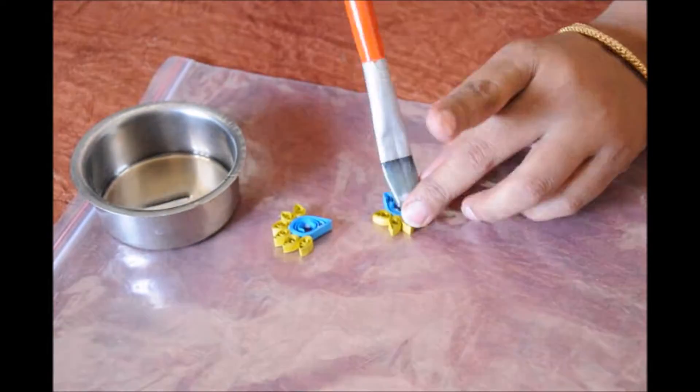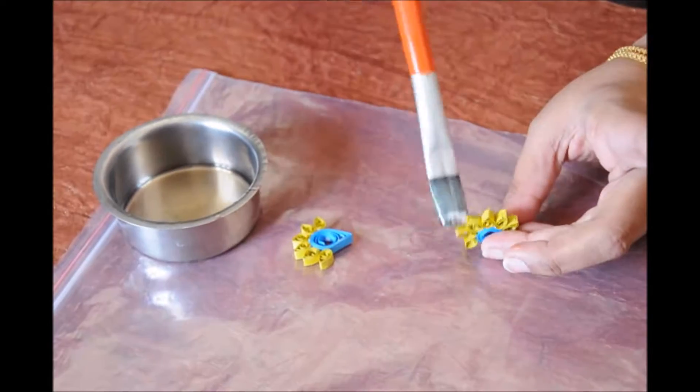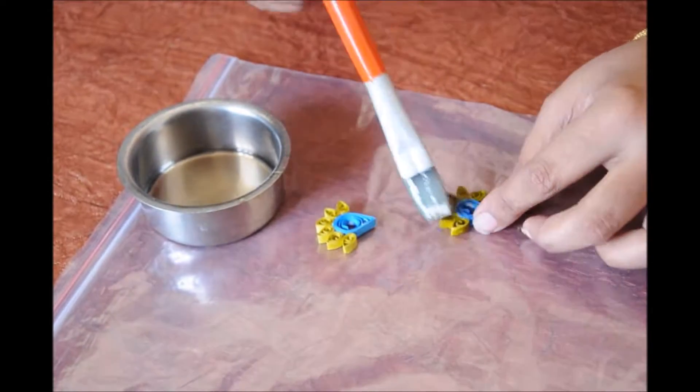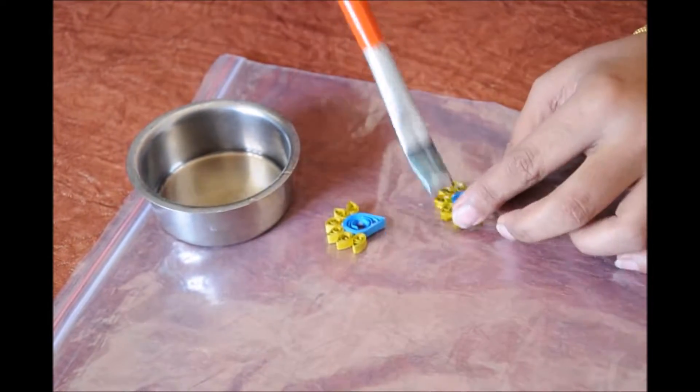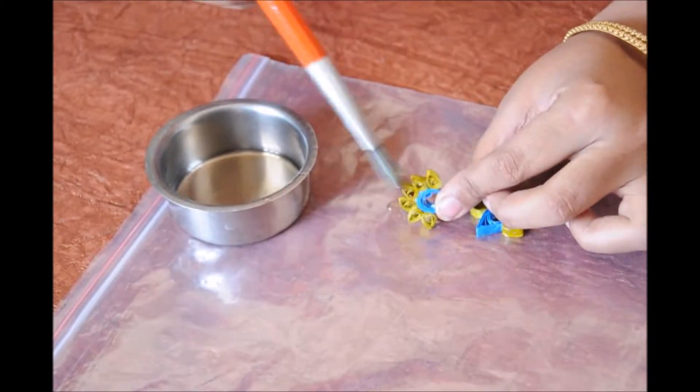And put varnish on it, quilling varnish on it. It gives a nice shiny luster to the earring. If you notice the color has changed. The color changes after you put varnish. After it dries, it comes back to the natural normal color.